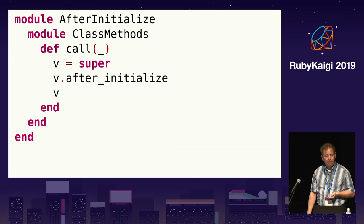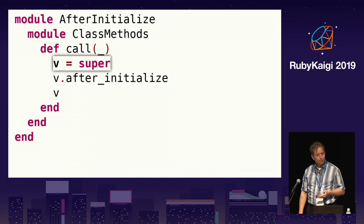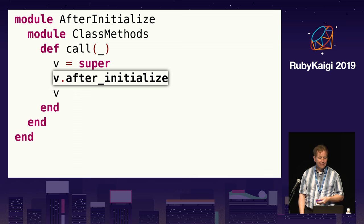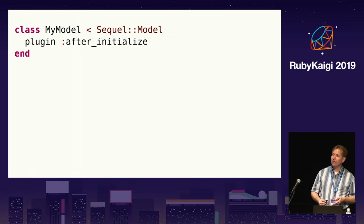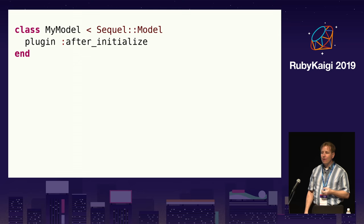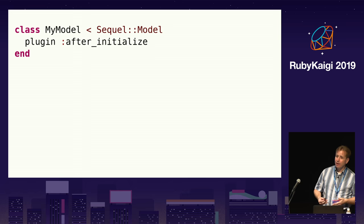The class methods module defines the call method. The call method first calls super to get the default behavior — returning the model instance with the hash of values — and then it calls the after_initialize method to run the initialize hooks on the instance. By using a plugin to implement initialize hooks, Sequel makes it so that only users that need the initialize hooks have to pay the cost for them. Most users do not use initialize hooks and do not have to pay the performance cost. Even for applications that use initialize hooks, they're often only used in a small number of models, and with Sequel you only load the plugin into the models that need them.